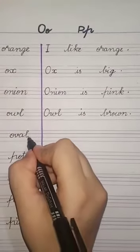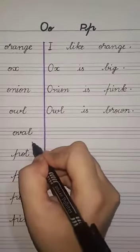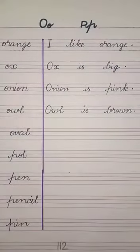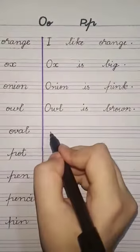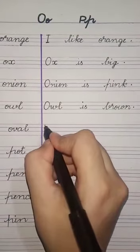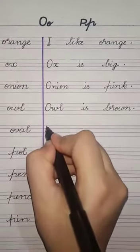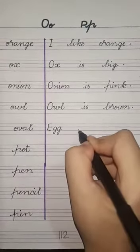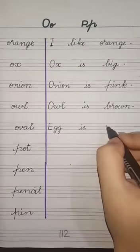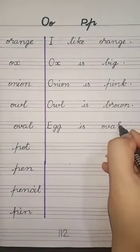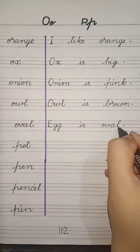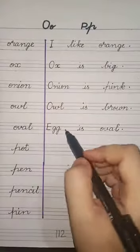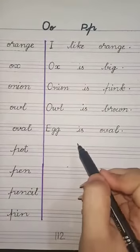Next is Owl shape hoti hai. Owl ki shape kis color ki? Egg is oval. Egg ki joh shape hoti hai - E-G-G, egg. Then 'is', then oval - O-V-A-L. Joh egg hoti hai woh oval shape ka hoti hai. Ok students? Is tarah humhaarhe O wale joh words aur sentences hain woh complete ho gaya hai.